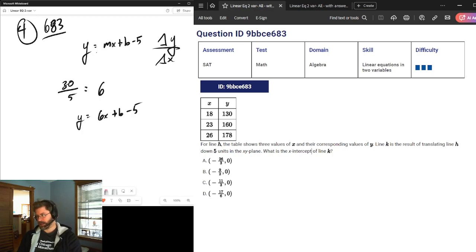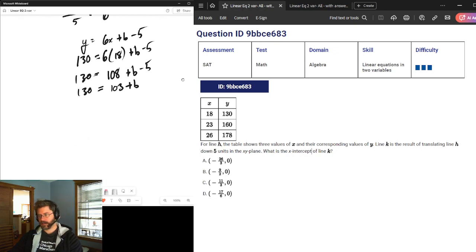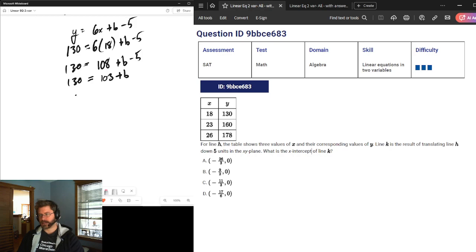To find the value of b, we take a coordinate point. Always pick the smallest number. Plug it in for x and y. 6 times 18 plus b minus 5 equals 130. Now, it's just a matter of combining our like terms and simplifying. Let's do this multiplication first. 6 times 18. If you can't do it in your head, you are allowed to use a calculator. That's 60 plus 48 is 108. Plus b minus 5 is 130. 108 minus 5 is 103. Add the b. Subtract the 103 over. Make sure we carry it out. Subtract the 103 over, and naturally we get 27.